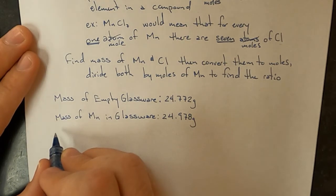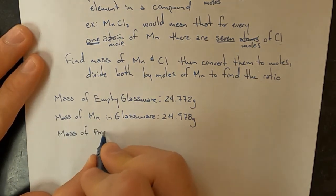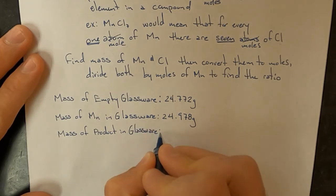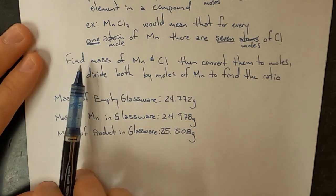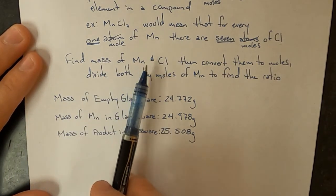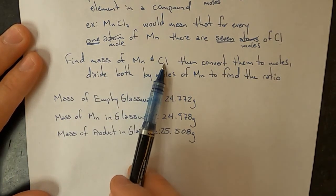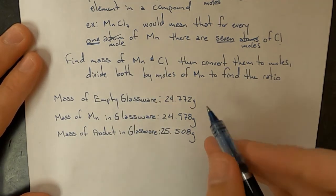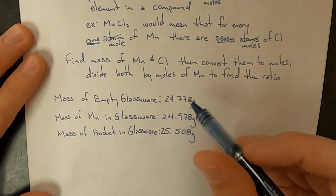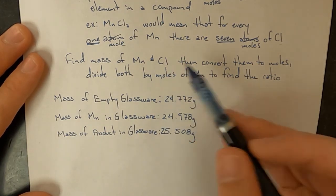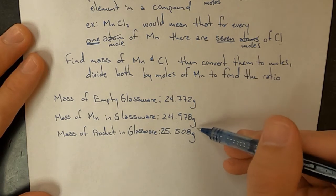And then on day two, the manganese chloride product with the glassware. Now the overall strategy is that we need to find the mass of manganese and the mass of chlorine in this compound. To find the mass of manganese, it's going to be the difference between these two. And to find the mass of chlorine that was added into the compound, it's going to be the difference between these two.